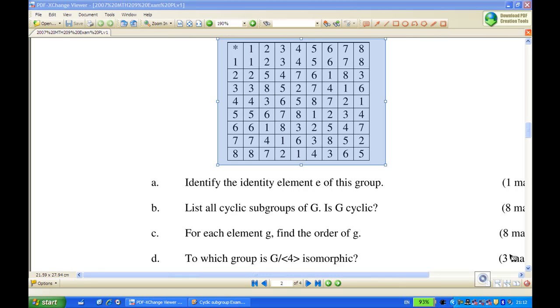Hi, in this recording we are given a group Cayley table. I'm going to show you how to find the order of each element inside this group, referring to part C of the question, and also to find the factor group or quotient group G modulo the cyclic subgroup generated by 4, and find out what this group is isomorphic to.